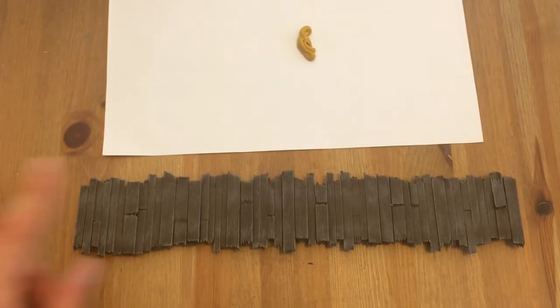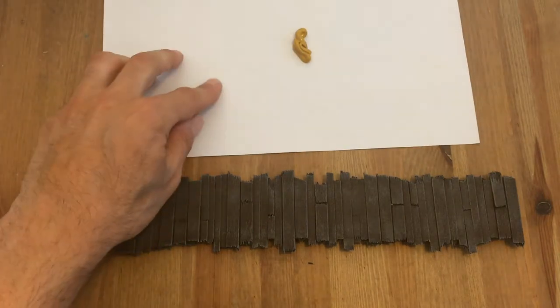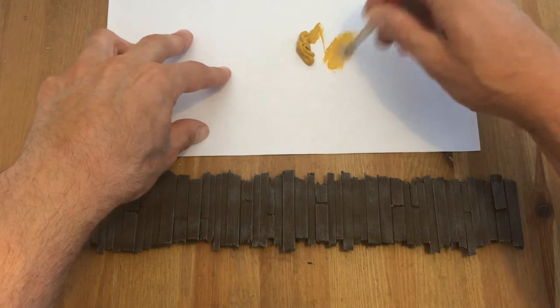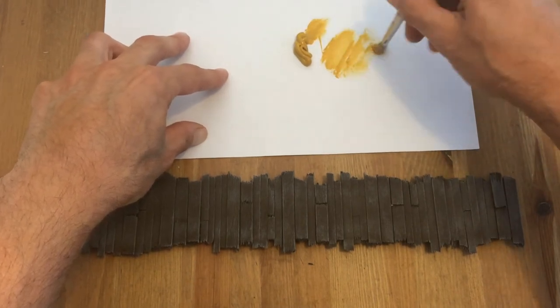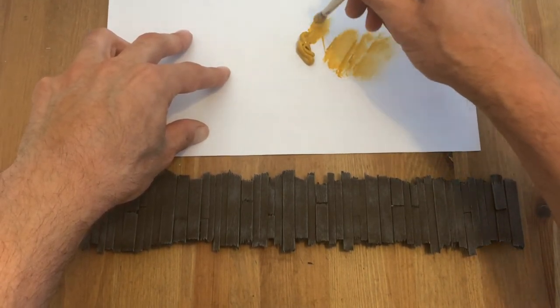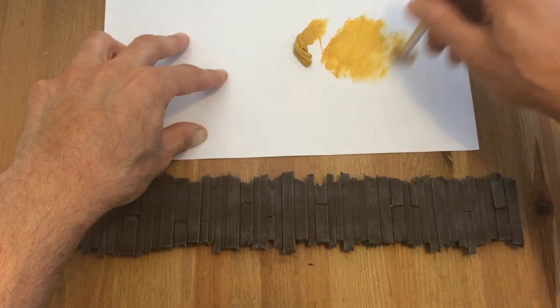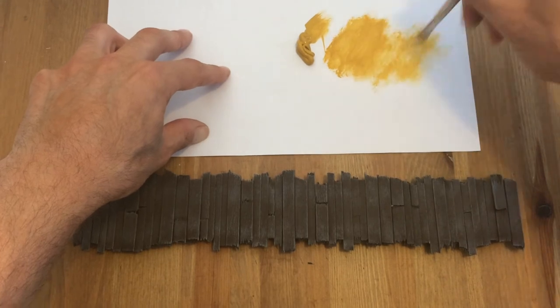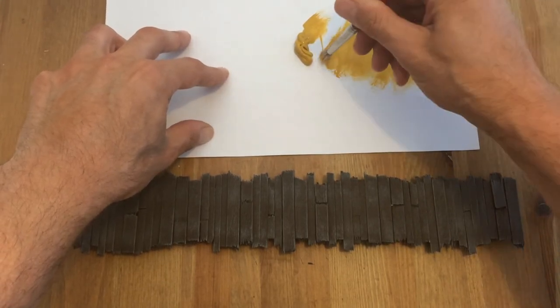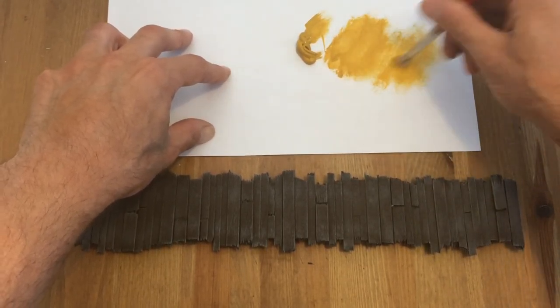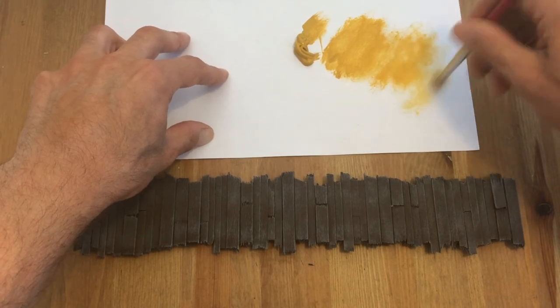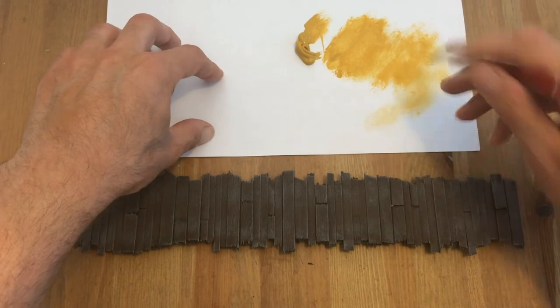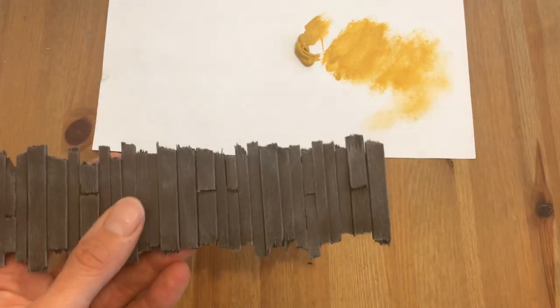So we have the brown down, we have the gray for the weathering, and the last step is to get a little bit of our yellow ochre for our accent color. Now remember, this is going to be a highlight, our last highlight, and we don't want to use a ton of it. We just want to use this to help accentuate and pop the edges, the corners, pieces that stick up, different planks even more.